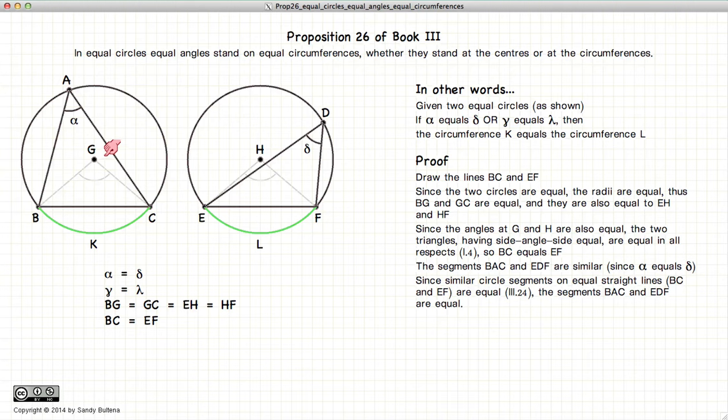Now, according to Proposition 24 of Book 3, if you have two similar circular segments where the base is equal, in other words, if BC is equal to EF, then these two similar segments are actually equal, which means that the circumference BAC is equal to the circumference EDF.